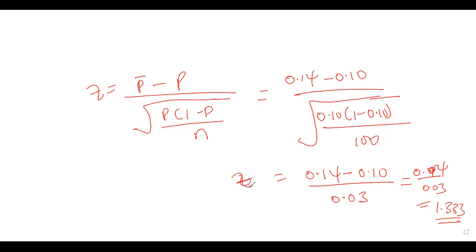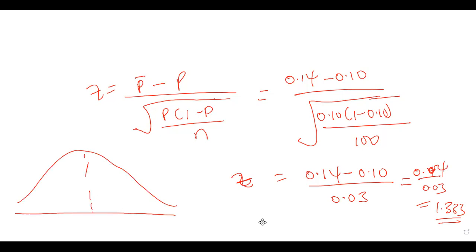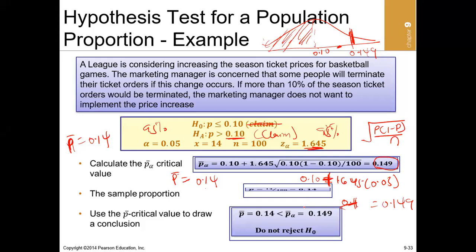This is a one-tailed test, as established in the previous video, because we are testing the null hypothesis that the population proportion is less than or equal to 0.10. We allow for a little more than that, but only up to a certain point.